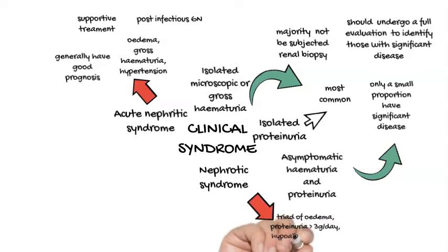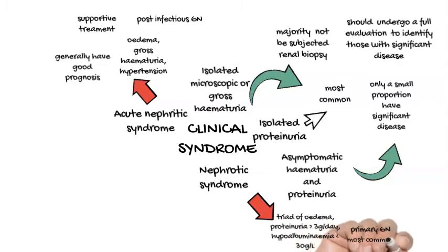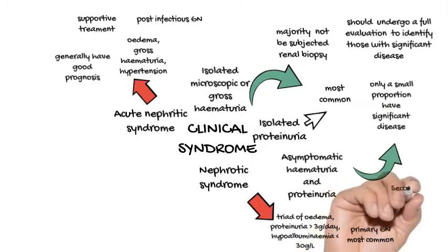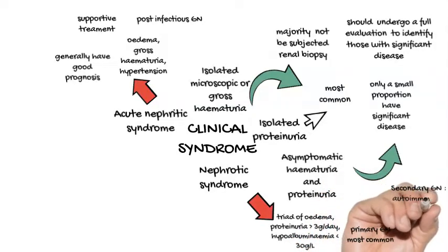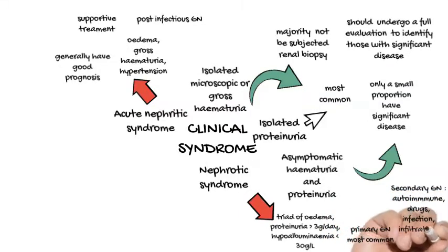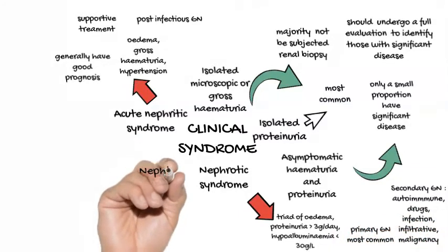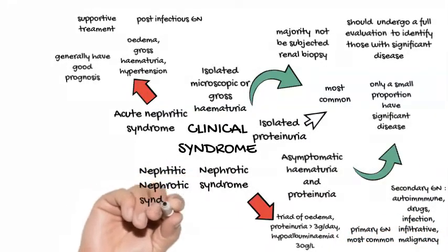Rarer causes of nephrotic syndrome include infections such as hepatitis B, hepatitis C, malaria, and human immunodeficiency virus. Amyloidosis, as well as malignancies such as those of the lung, gastrointestinal tract, lymphoma, and myeloma, should also be considered in the evaluation.